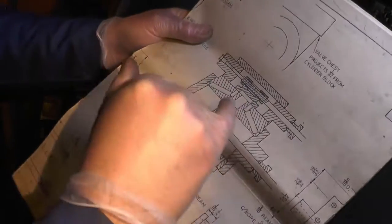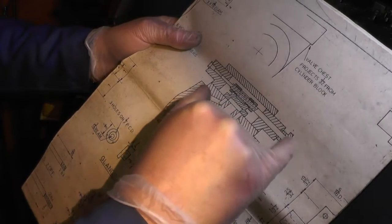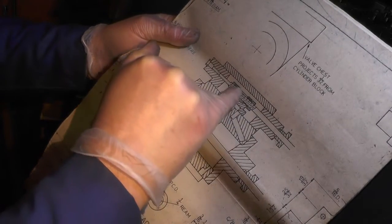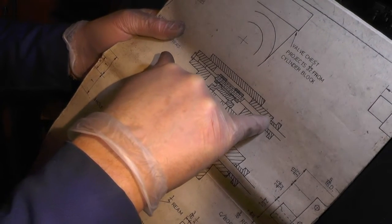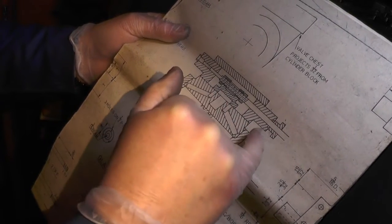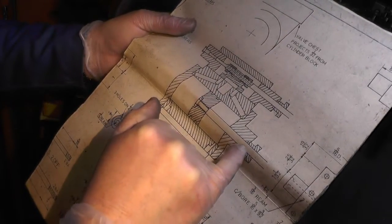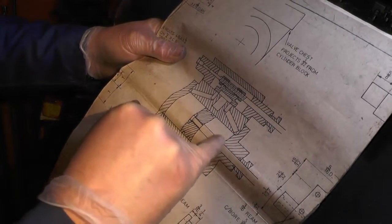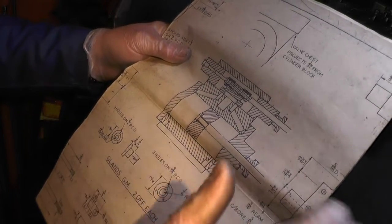Here's the valve chest and this is the gland where it fits on. It's to seal off the end where the valve spindle goes in. You put an O-ring in this groove here in the actual valve chest, and then it's bolted on with three 8BA screws to seal this end off. Similarly with the piston covers on the cylinders, exactly the same.